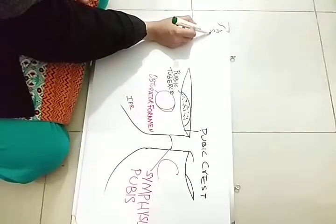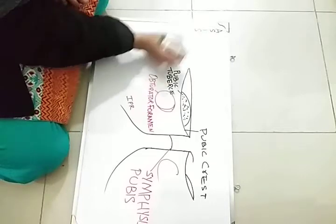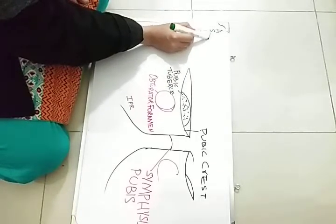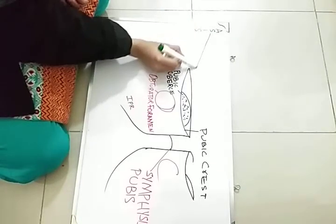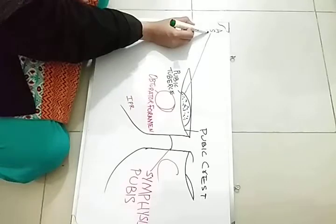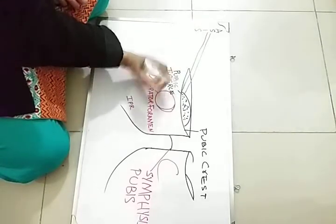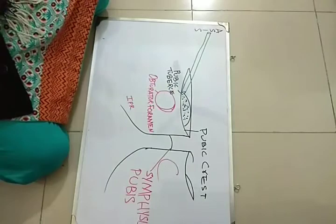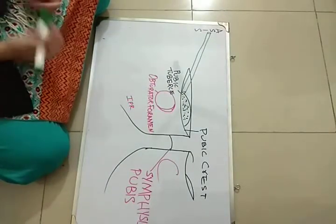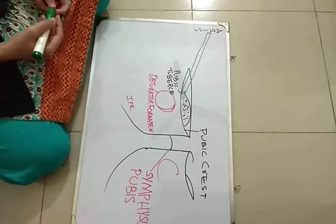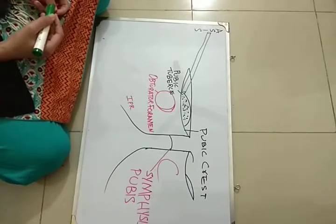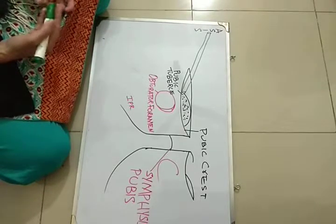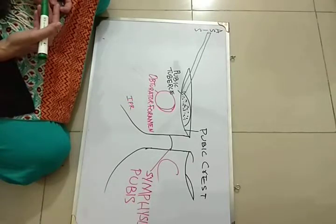So, from the anterior superior iliac spine till the pubic tubercle. The inguinal canal is a slit-like passage that extends from the deep inguinal ring till the superficial inguinal ring.